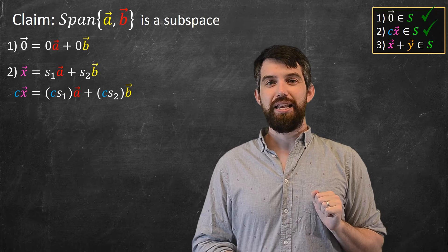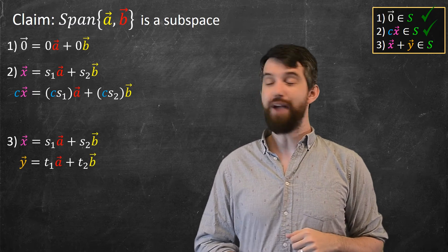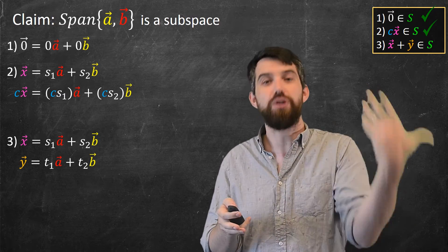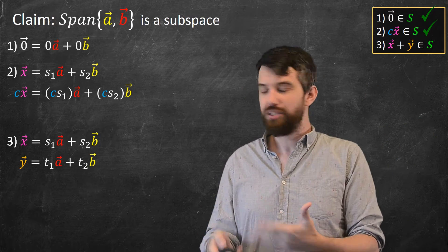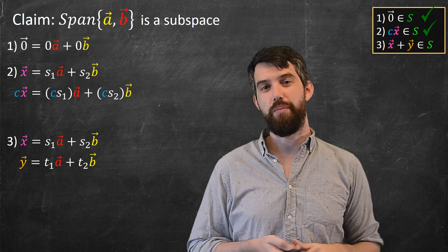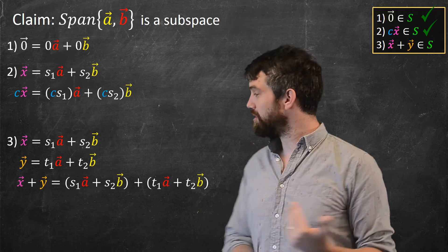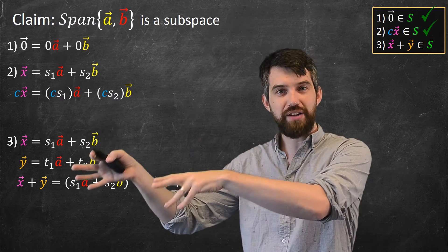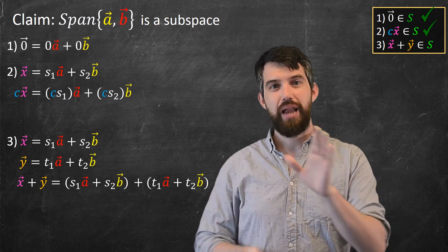Third property. Now I want to take two different vectors. So I've got the X that I had before, but now I'm going to add a Y, which is a different linear combination of A and B. So I've got this X and this Y, both in the span, both linear combinations. And then what I want to do is I want to add them up together. So I can just go and add them and I'm going to substitute in what I have. So I get the one vector plus another.